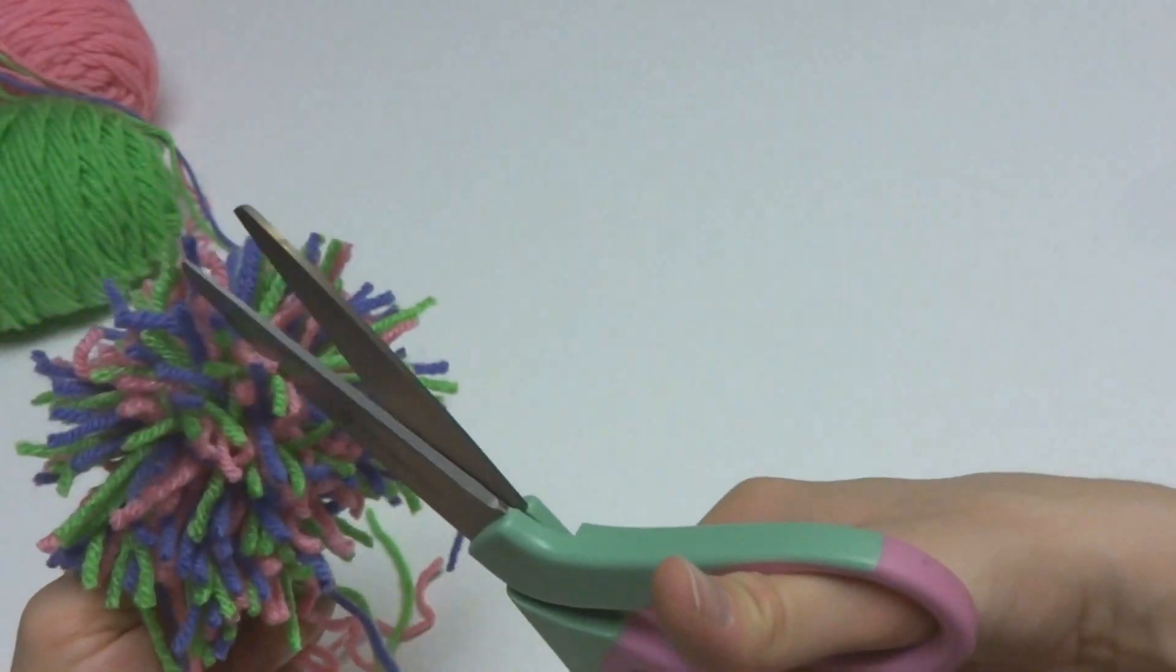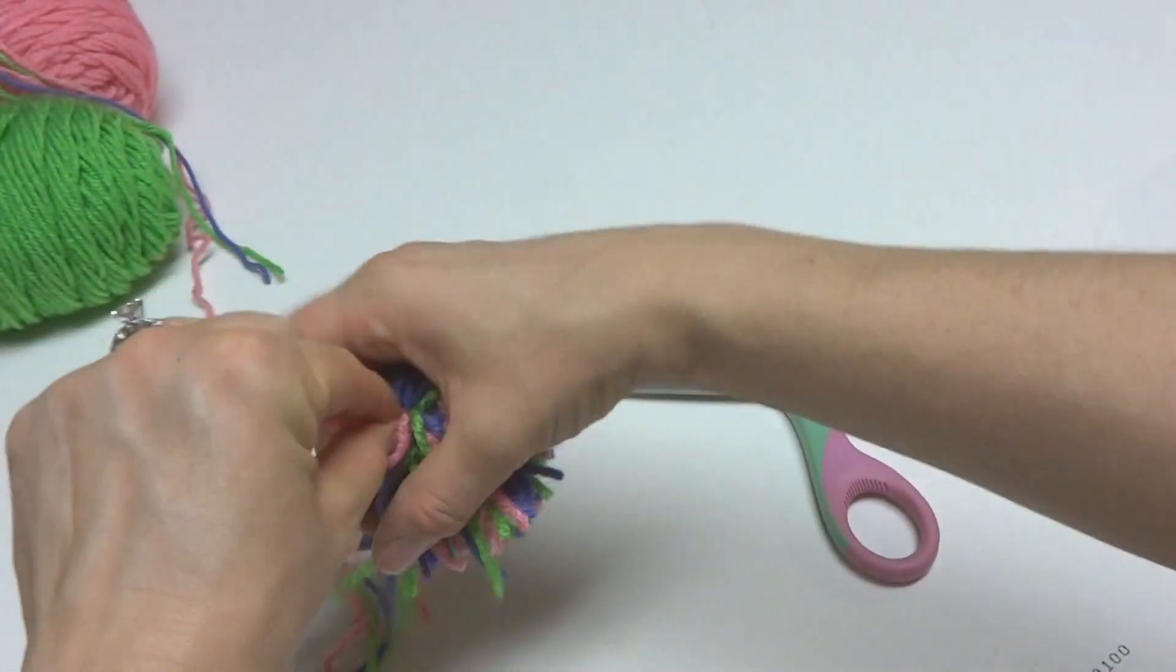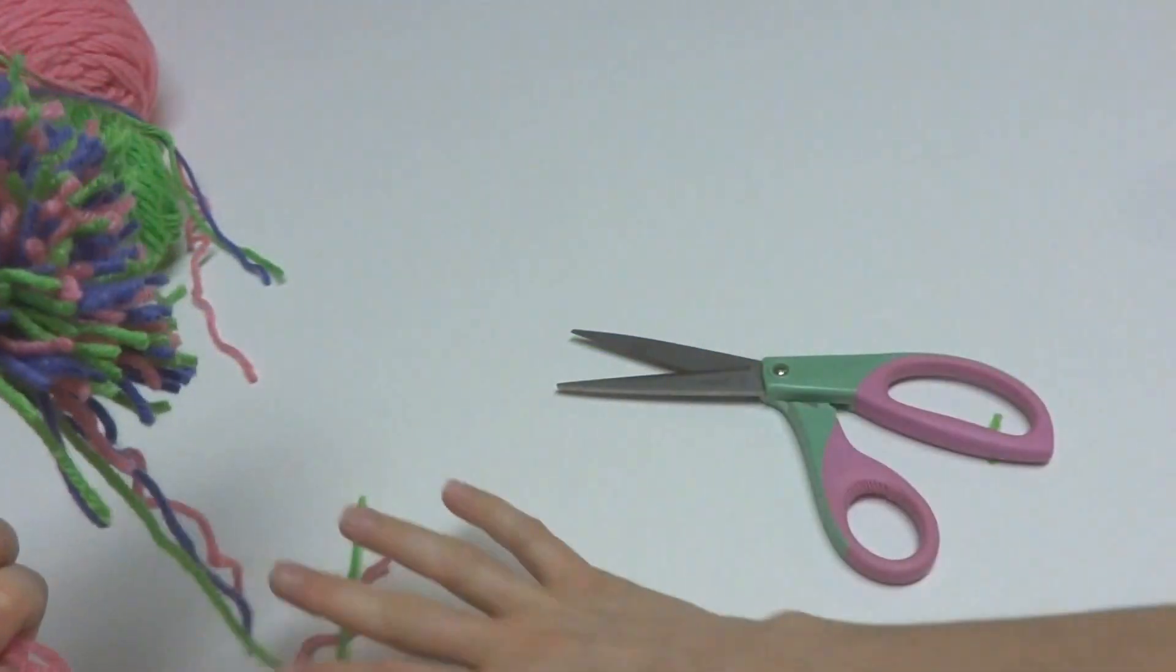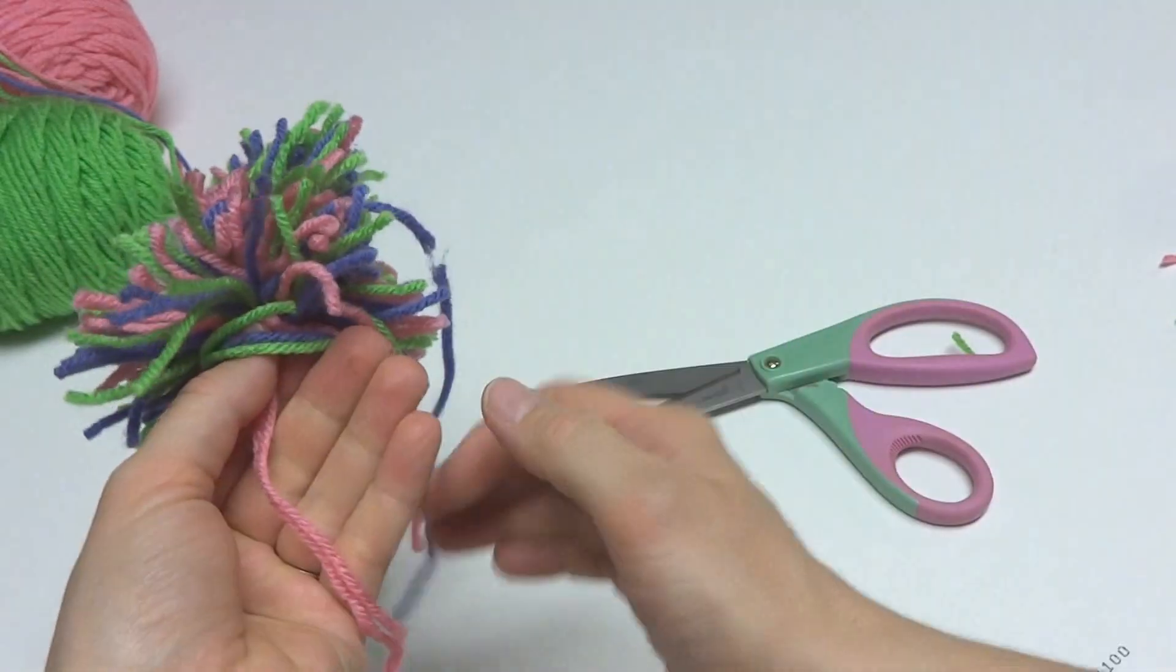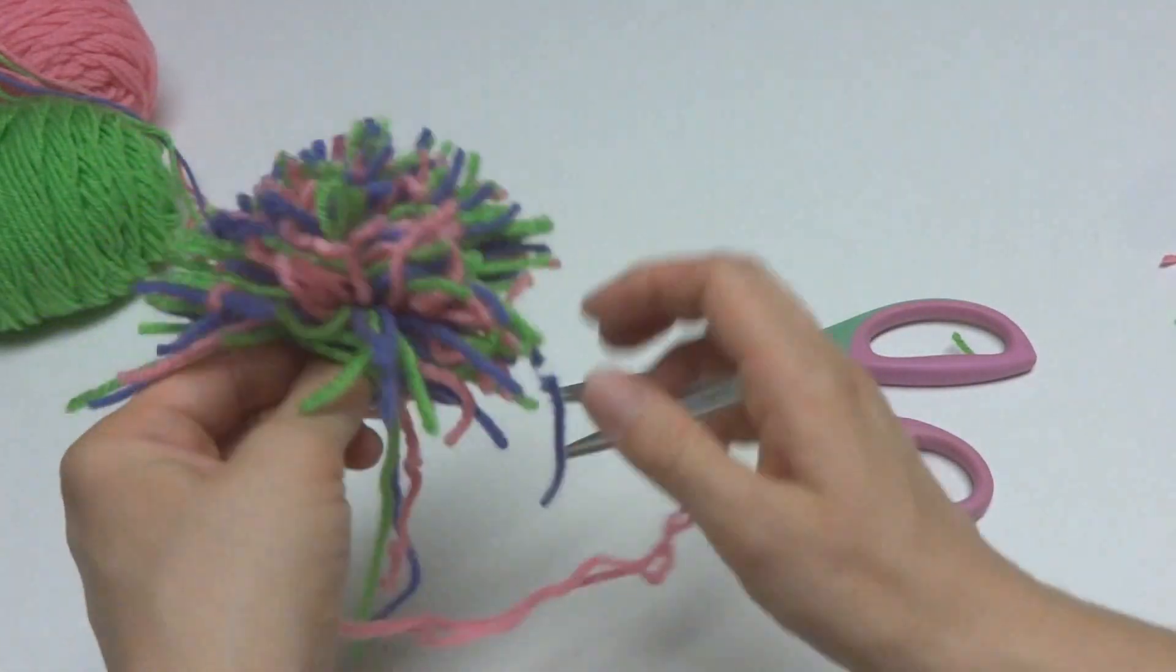Just kind of get in there and see if you can find all the loops. There's always that last inevitable loop that's hiding, but that's all right. So it's going to kind of look messy like this. It looks kind of wild and crazy. And we're still holding those strands. We don't want to cut those.